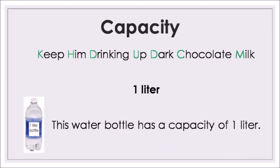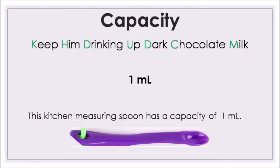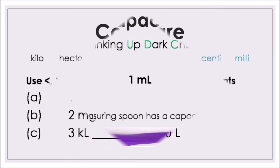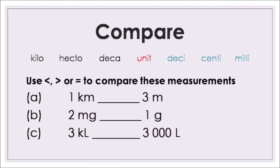One liter: a water bottle has a capacity of one liter, so the one-liter water bottle shows you what one liter looks like. One milliliter: in the kitchen, a small measuring spoon has a capacity of one milliliter — that is a very small amount.